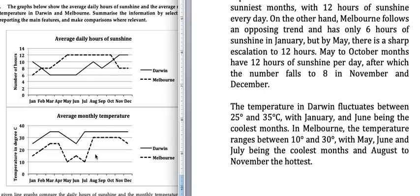In Melbourne, the temperature ranges between 10 and 30 degrees, with the lowest at 10 and the highest at 30. May, June, and July are the coolest months, while August to November are the hottest months.